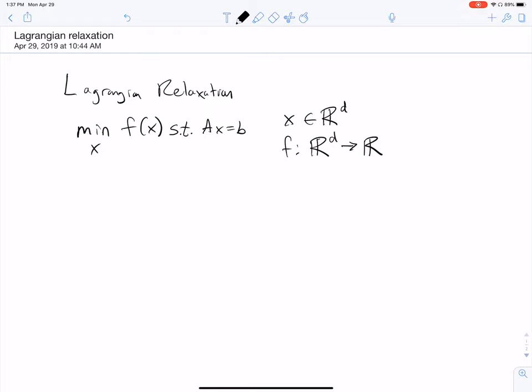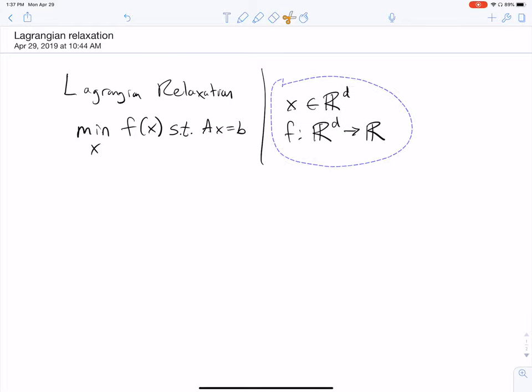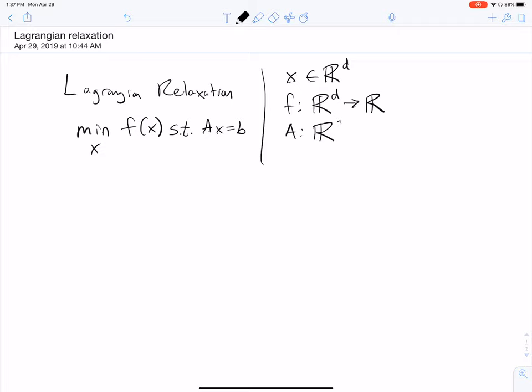Here a and b are other parts of the problem. A is going to be a real matrix of the size c by d, and b will be a real vector of size c.